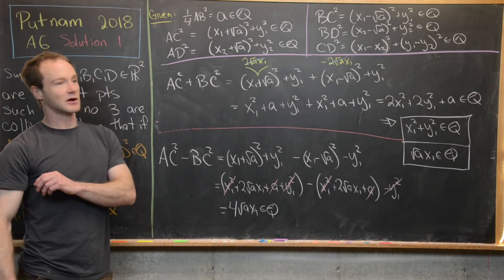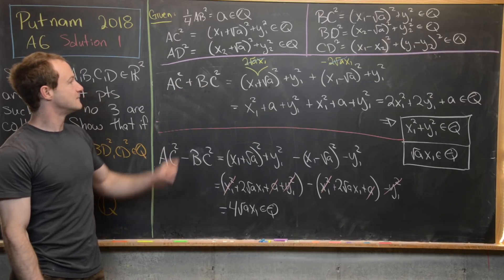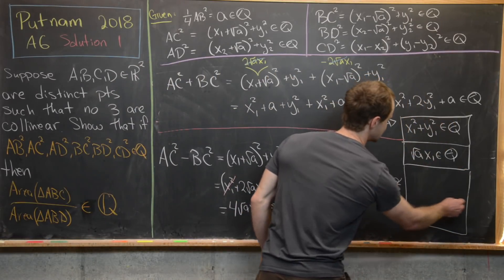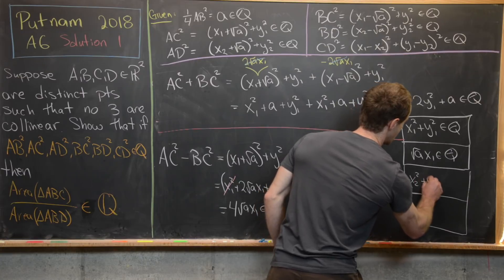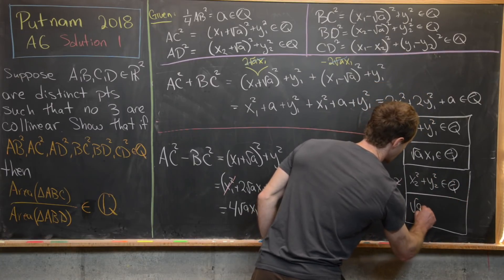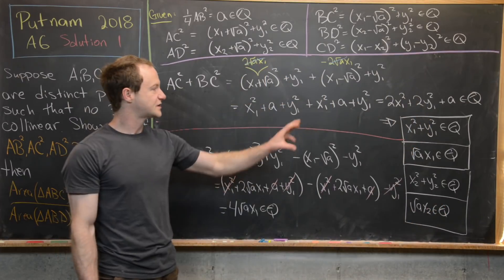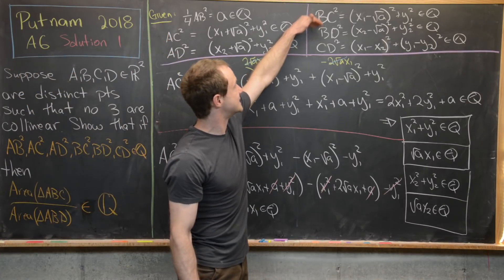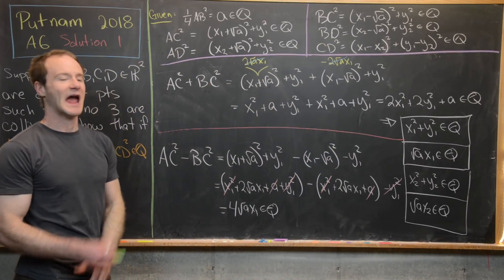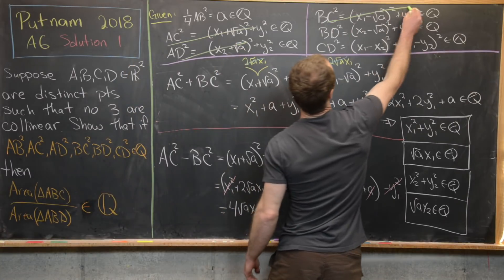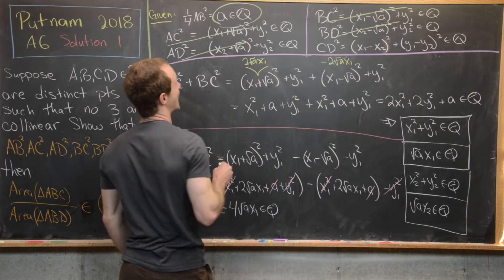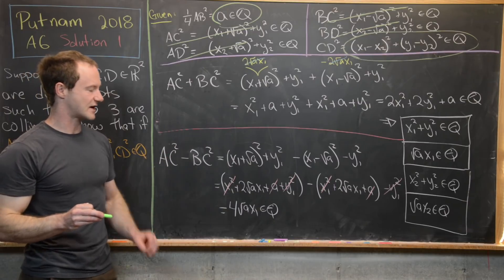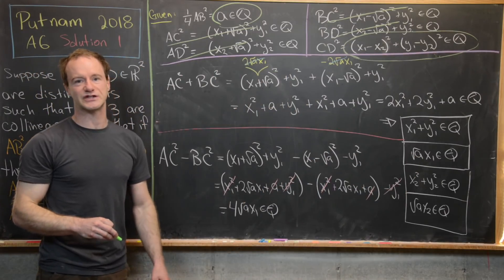Using AD and BD in the same way, we get x2² + y2² is a rational number and √a · x2 is also a rational number. So we've built four facts from the given squares of AC, AD, BC, and BD. We no longer need those original givens and can cross them off, leaving us with a rational, plus the CD² fact.